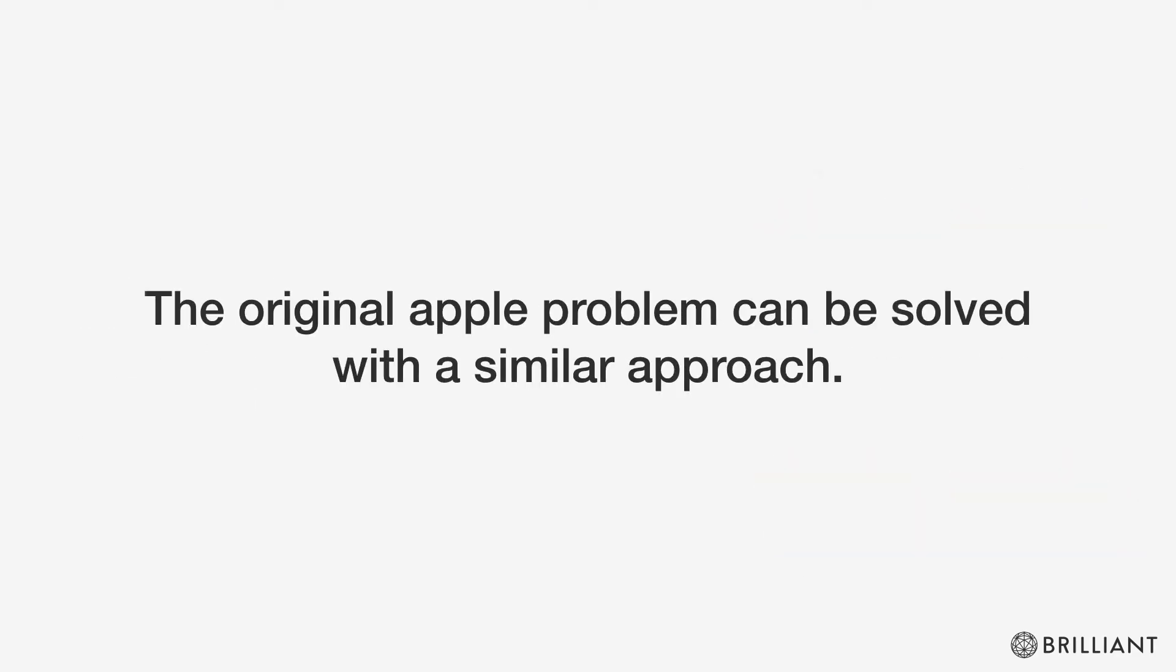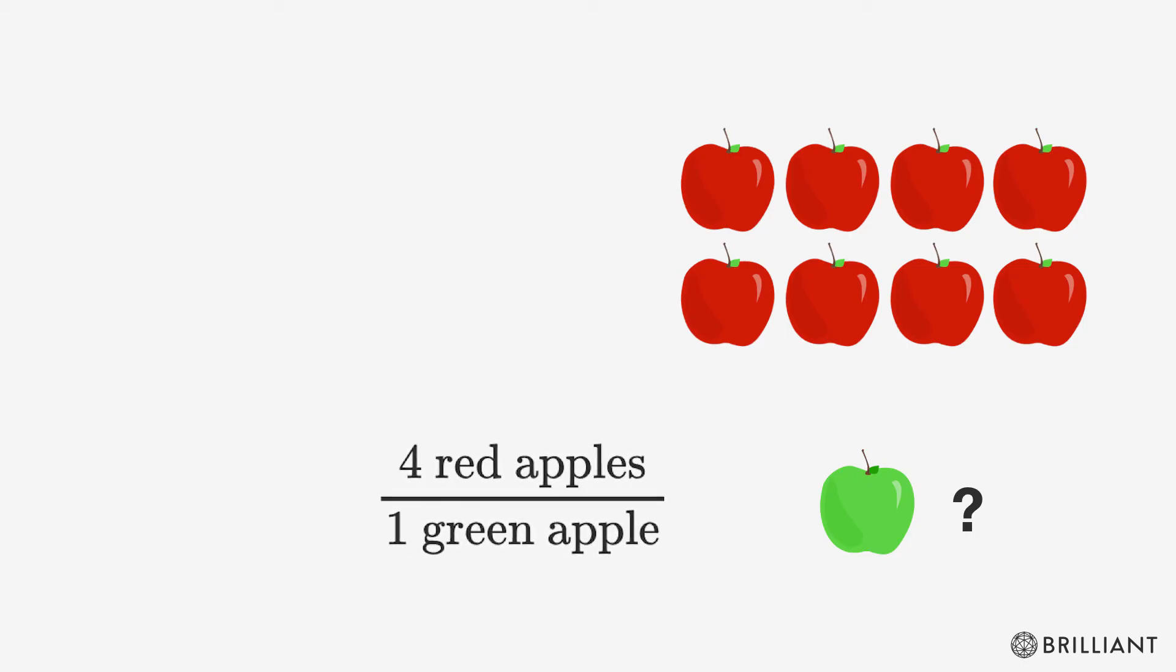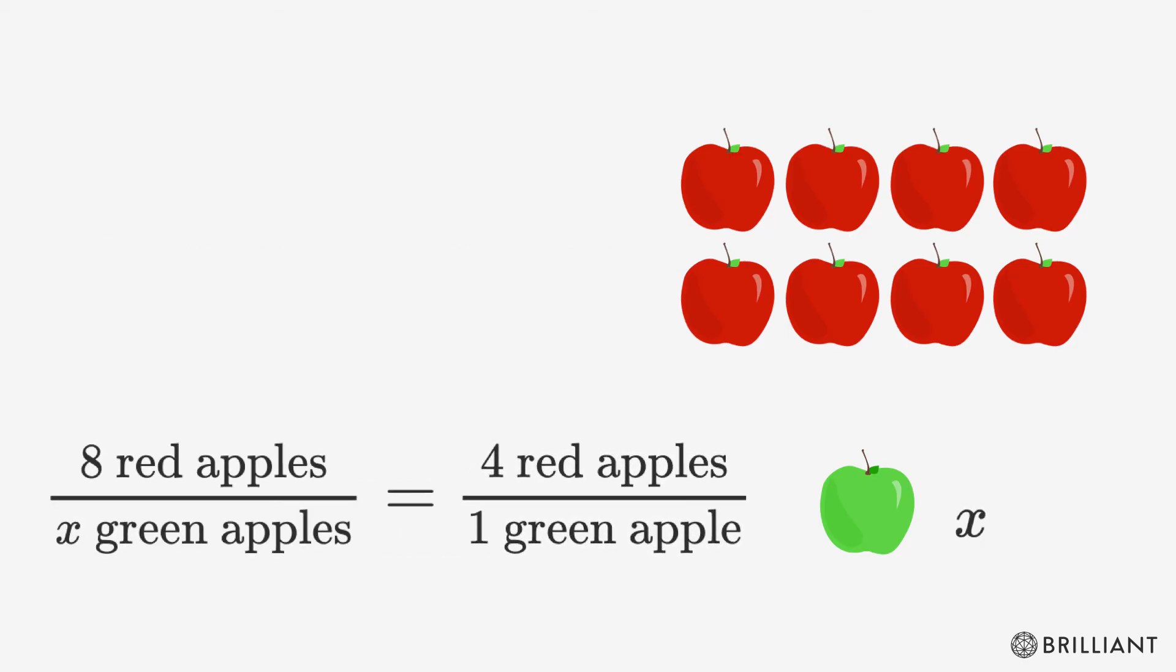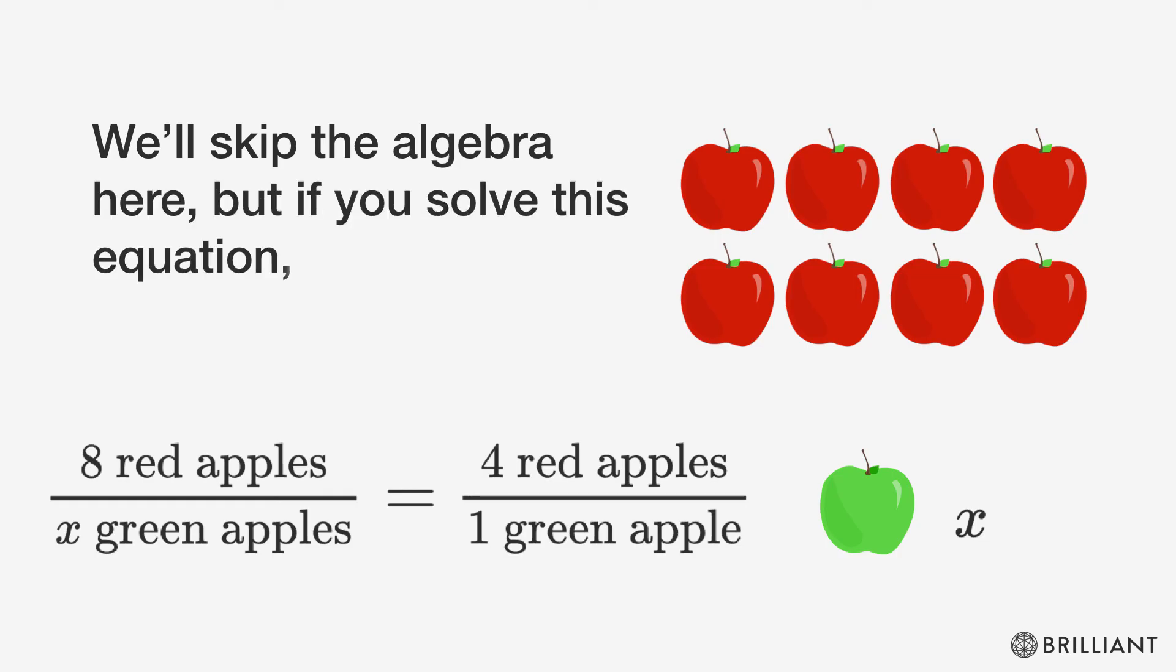The original apple problem can be solved with a similar approach. Again, you want a ratio of four red apples to one green apple. This time represent the number of green apples you need to buy with x. We'll skip the algebra here, but if you solve this equation, you'll find that x equals two.